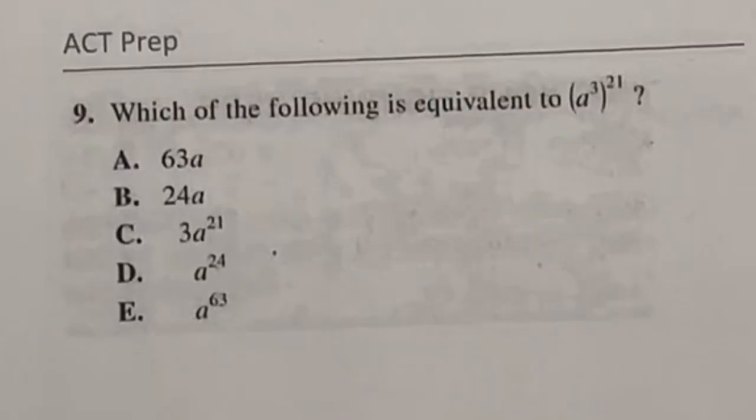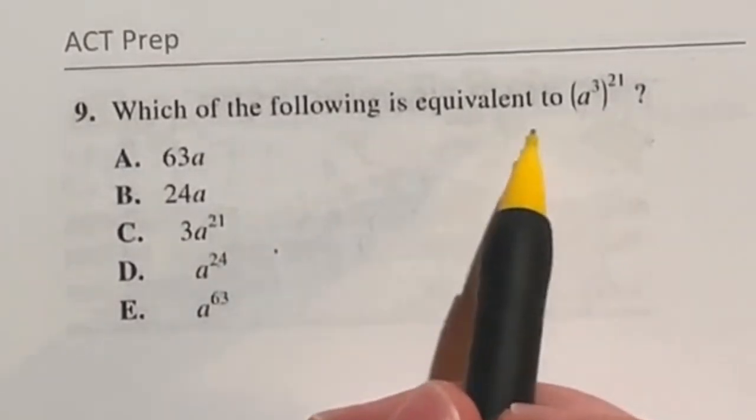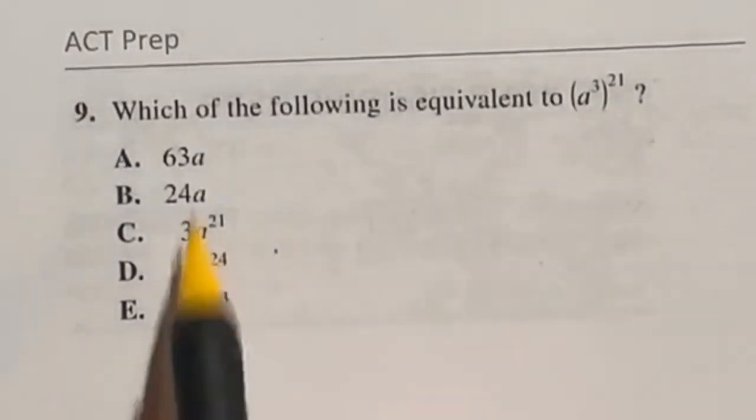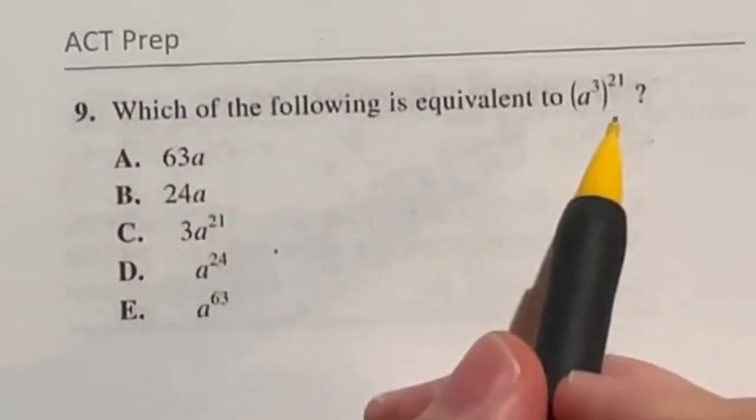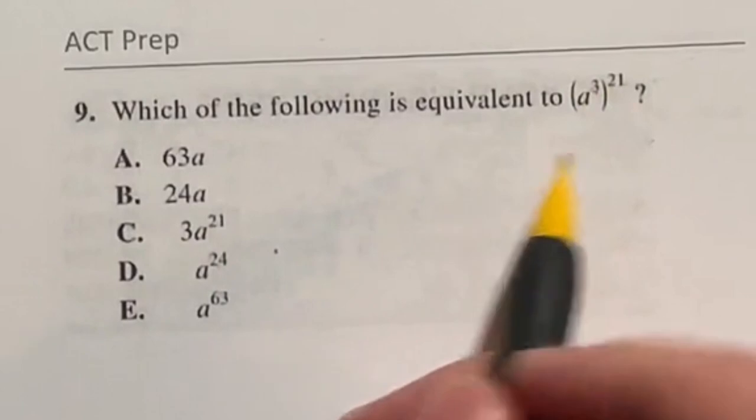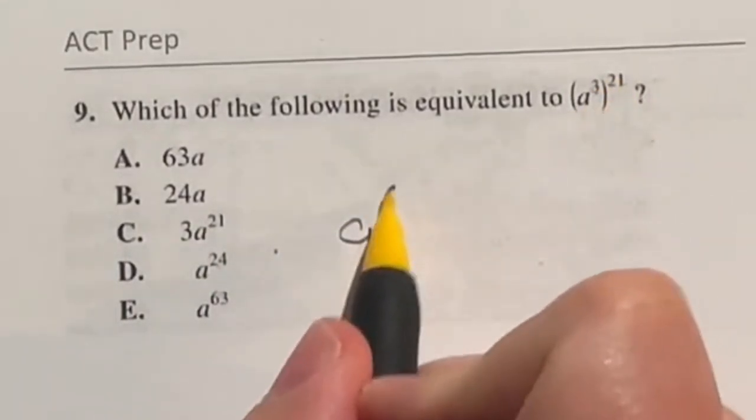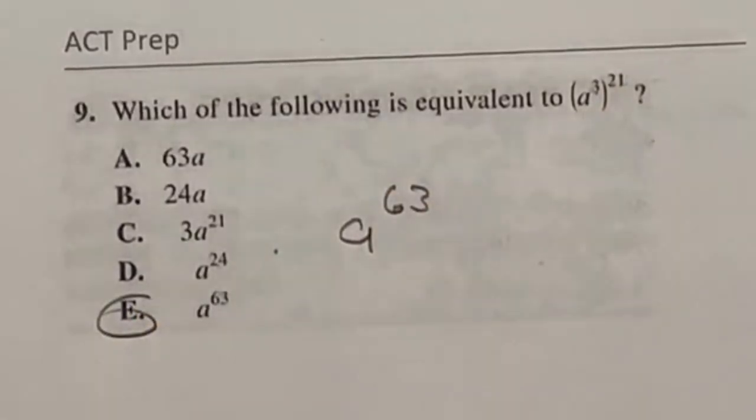If you get a question like this you should be singing hallelujah because this is just too easy for the ACT. Let's take a look-see. It wants us to change this expression to one of these down here and we should know that any exponent raised to an exponent means you can just multiply the two of those together. So that's going to give us a raised to the 3 times 21 which would be 63 which means our answer here is E.